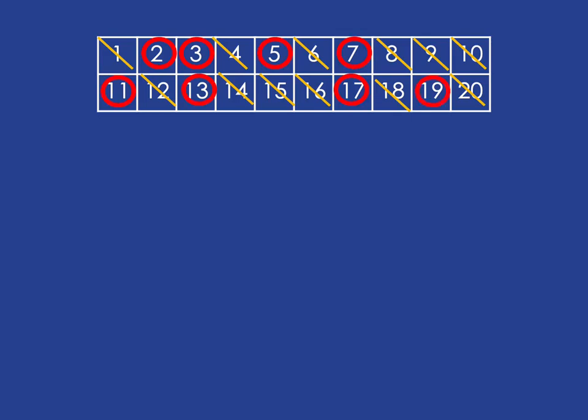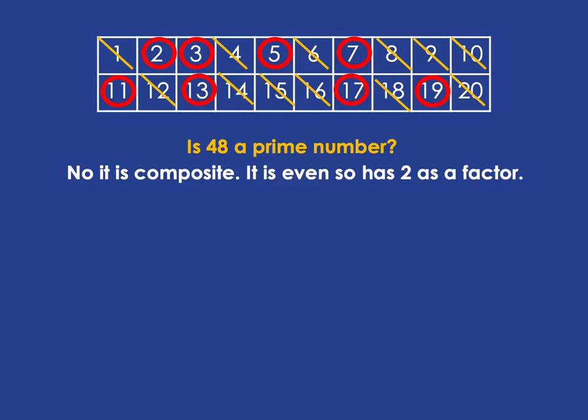Now if we want to look at bigger numbers and decide if they're prime, how do we do that? We could ask: is 48 prime? That's quite easy — 48 is even, so it has two as a factor, meaning it definitely isn't prime. It's composite because it has two as a factor.